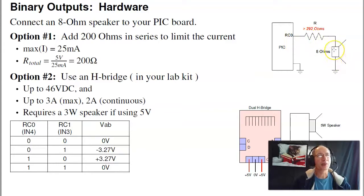The 8-ohm speaker, if I only want to get 20 milliamps in the speaker, 5 volts at 25 milliamps is 200 ohms. Make this a 200-ohm resistor, and now the PIC drives the speaker. It's not going to be real loud, but loud enough you can hear it.